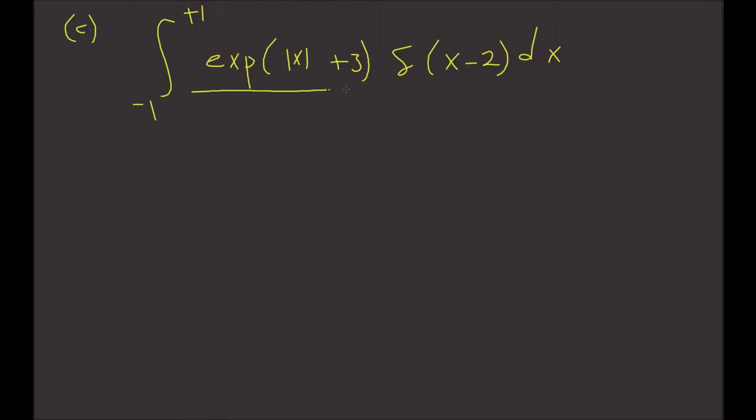But before you start evaluating this, look at this—negative 2 doesn't sit within the limits between -1 and +1. So what this tells us is that this is going to be just 0. So the whole thing is equal to 0.